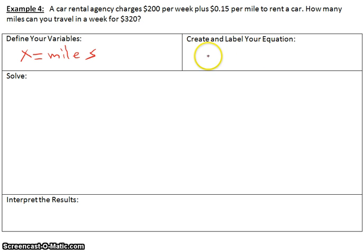Now we need to create and label our equation. We're told that we're trying to find how many miles we could travel in a week. So for a week, automatically we pay $200. That would be our constant. Now we have to add the miles traveled, which would be 15 cents per mile, with our X value connected to the 15 cents because we don't know how many miles we've traveled. And then finally, this is supposed to equal $320.